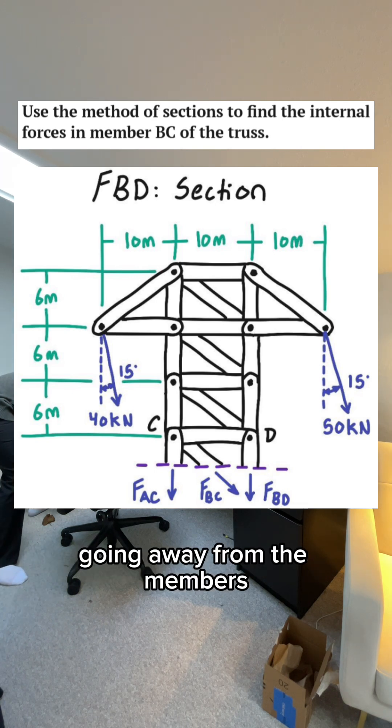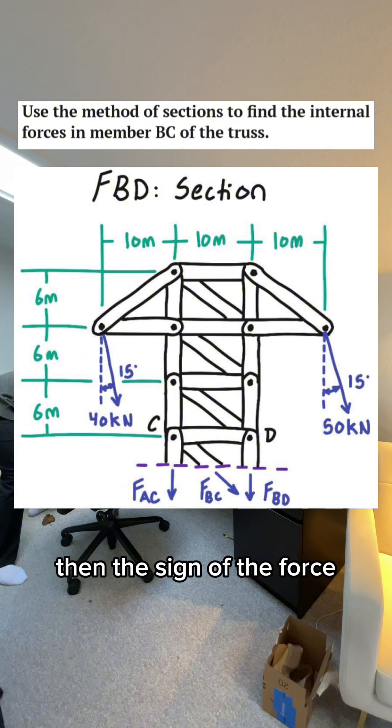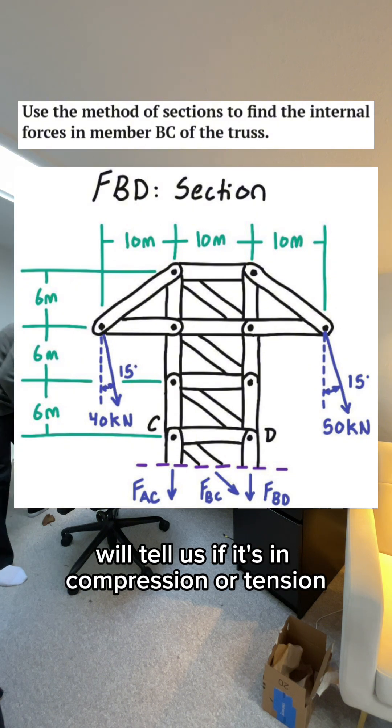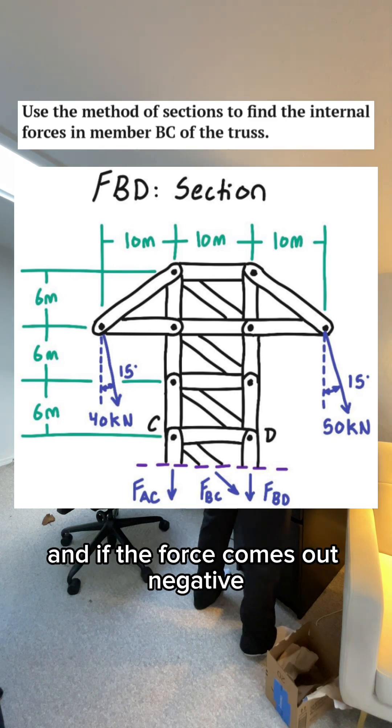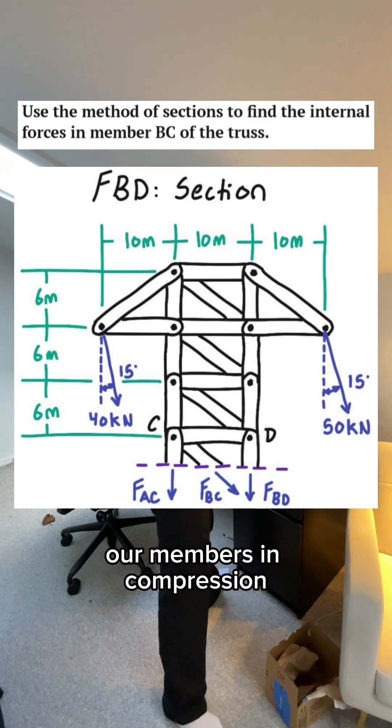If we draw those forces going away from the members, then the sign of the force will tell us if it's in compression or tension. If the force comes out positive, our member is in tension, and if the force comes out negative, our member is in compression.